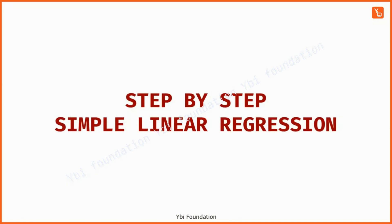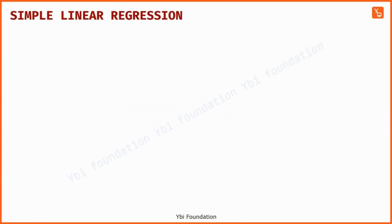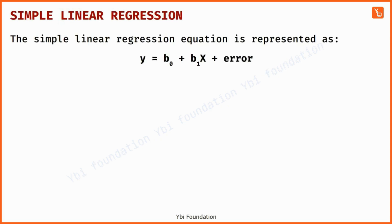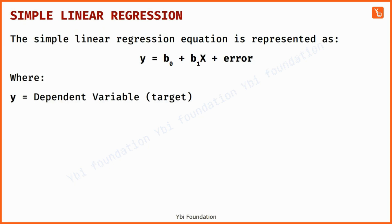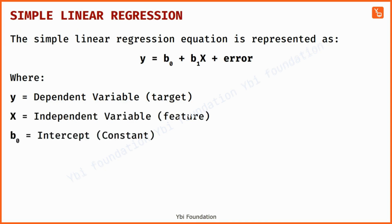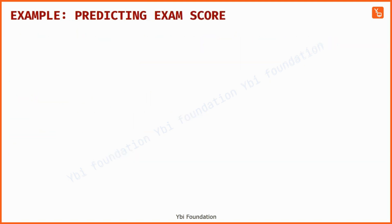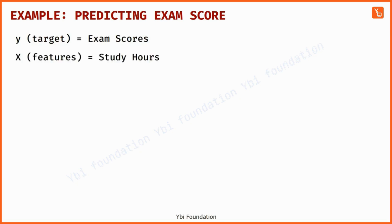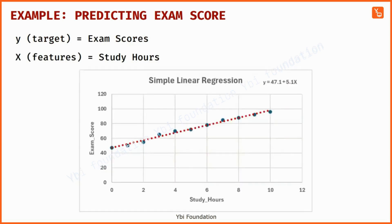Step by step simple linear regression. The simple linear regression equation is represented as y equals b0 plus b1x plus error. Here y is the dependent variable or target variable which we want to predict with the help of x, an independent variable also called a feature or input. b0 is the intercept or constant term, b1 is the slope or coefficient. In this tutorial, our target variable y is exam score and x or the feature is study hours. We are going to find a best fit line such that it represents exam score with the help of study hours.